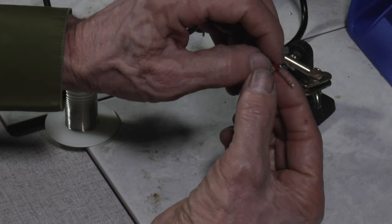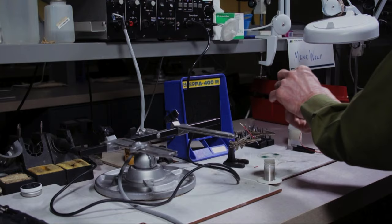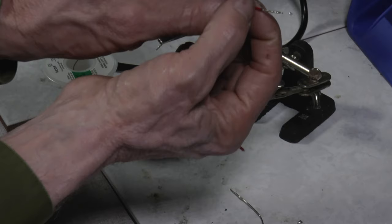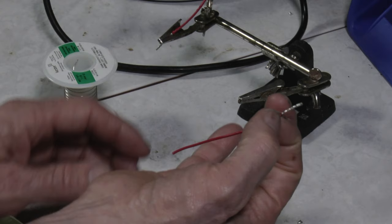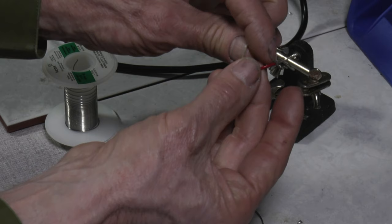Another thing you might want to look at on a tinned wire is underneath this insulation, there should not be any solder. You can test that by going in there, and if it feels flexible under there, that's good.